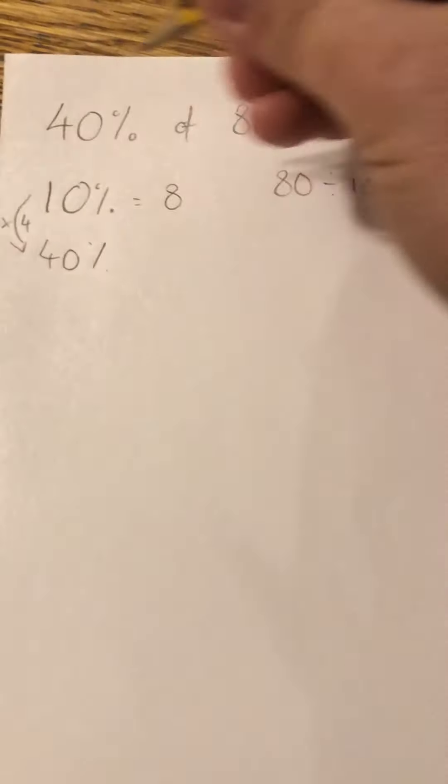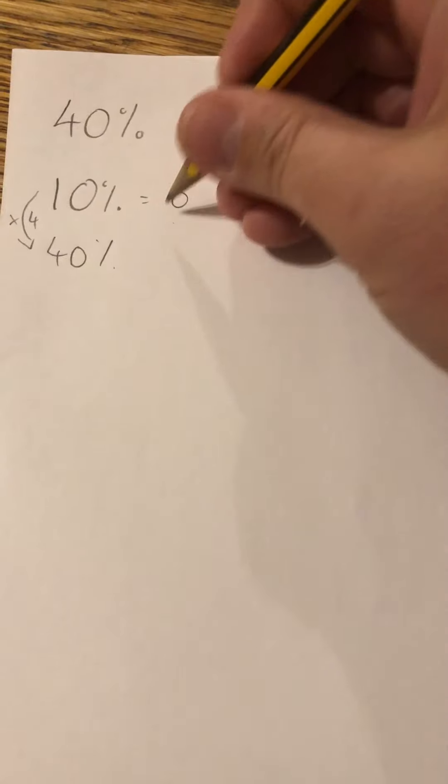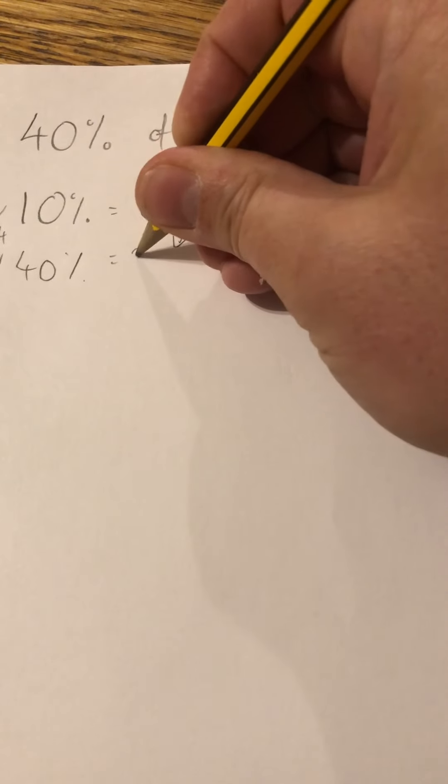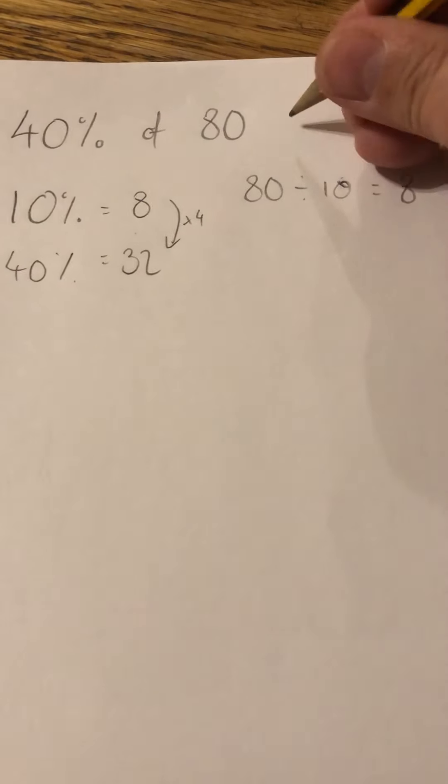So 10% is 8. 40% is 4 times bigger, so 8 times 4 is 32. Therefore, 40% of 80 equals 32.